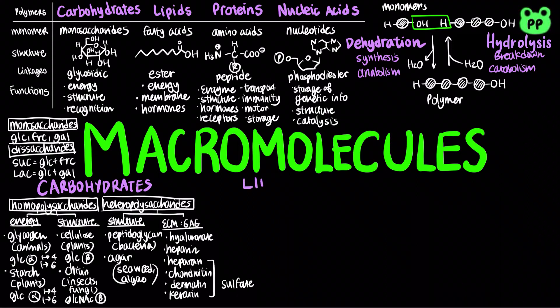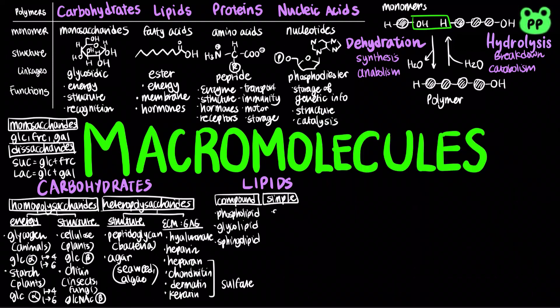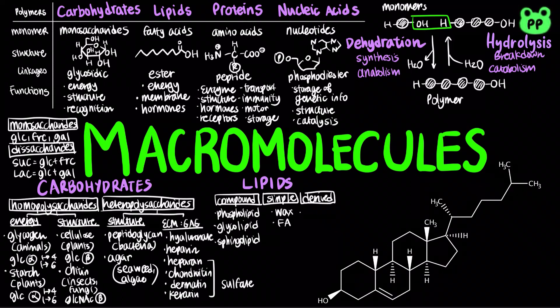There are three main classes of lipids. Compound lipids include phospholipids, glycolipids, and sphingolipids, which usually consist of a hydrophilic head and hydrophobic tails — key components of our cell membrane. Simple lipids include wax and fatty acids. Derived lipids include cholesterol, which is an important steroid characterized by a carbon skeleton consisting of four fused rings.